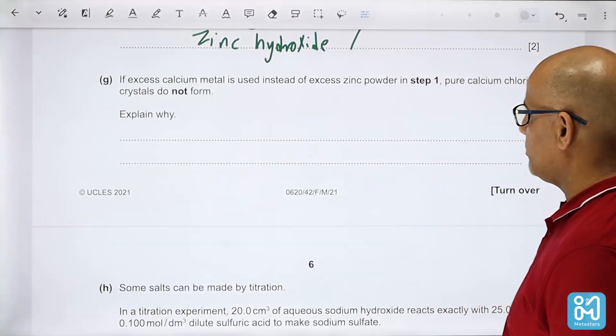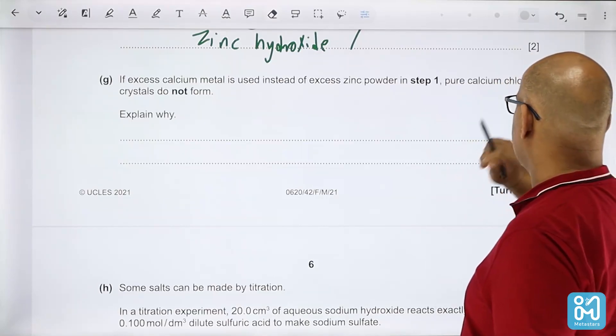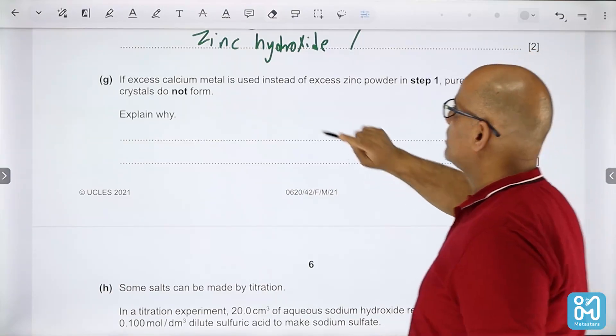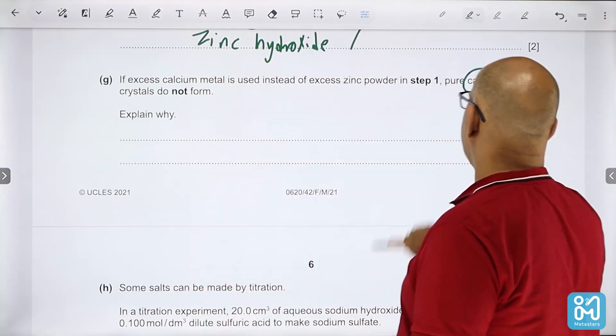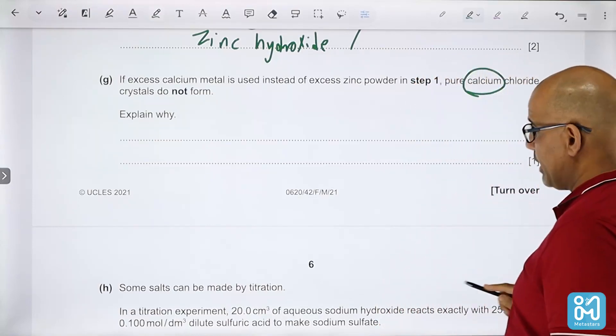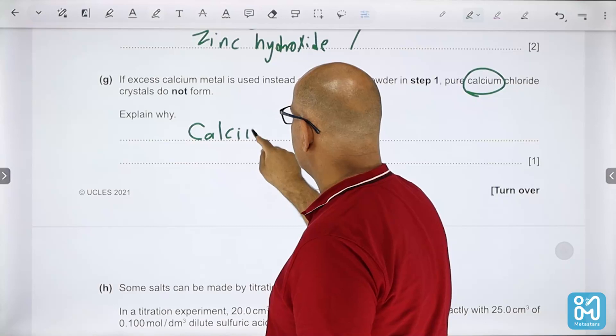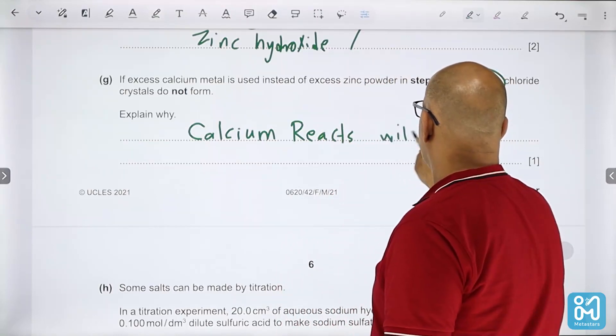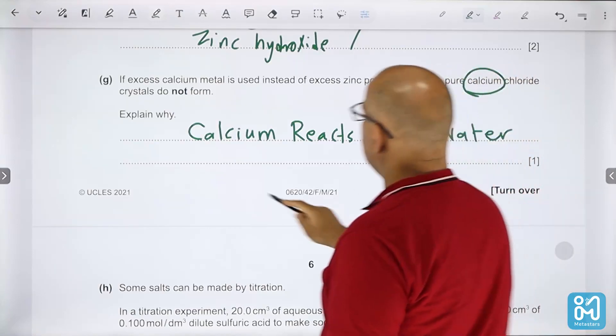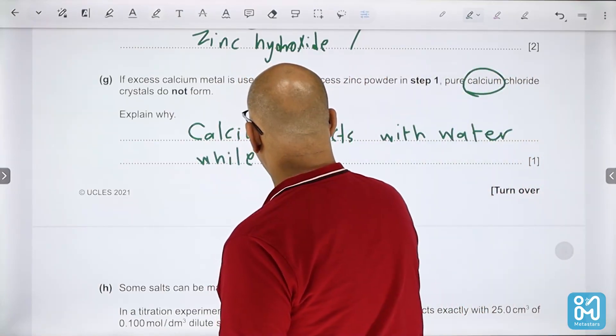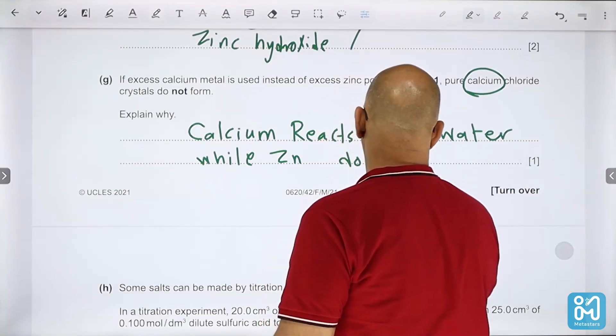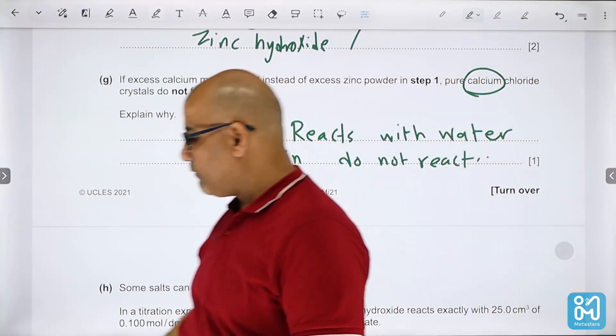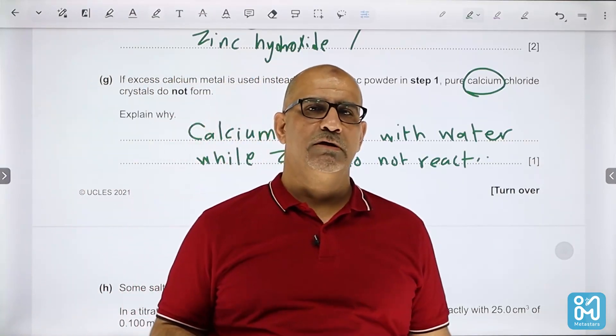For part G: if excess calcium metal is used instead of excess zinc powder in step one, pure calcium chloride crystals do not form. Explain why. What's the difference between calcium and zinc? Calcium is highly reactive. If you return back to the reactivity series, calcium reacts with water while zinc does not react with water, only with acid.